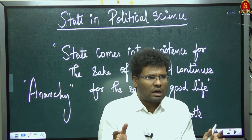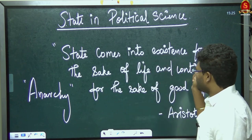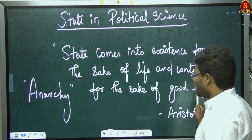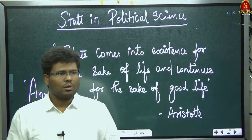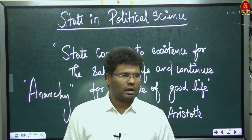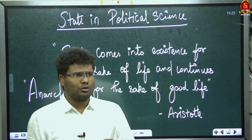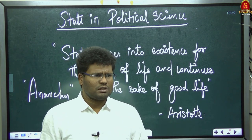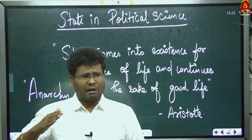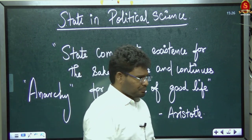Anarchy was the situation before the state came into existence. After the state came into existence, anarchy was removed and proper law and order was established. The state comes into existence for the sake of life and continues for the sake of good life. According to Aristotle, good life is a life with justice — each and everyone should have justice, and the state should give justice to the people.